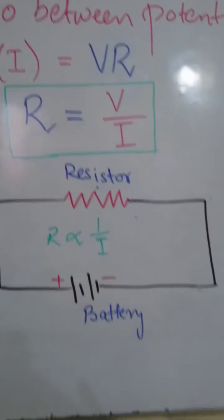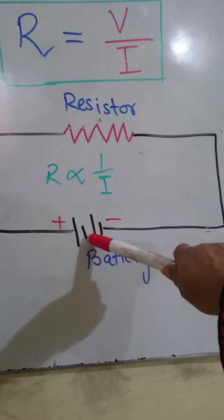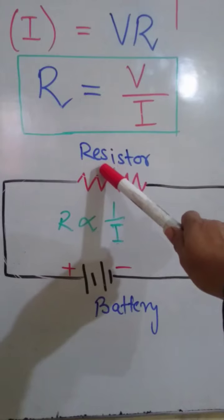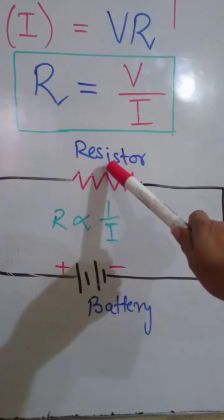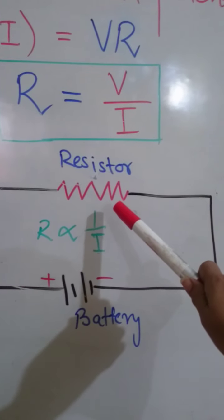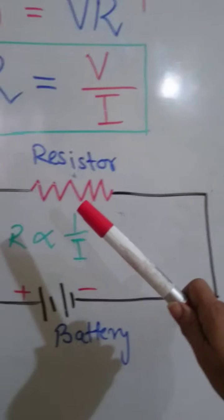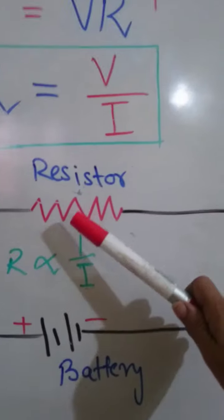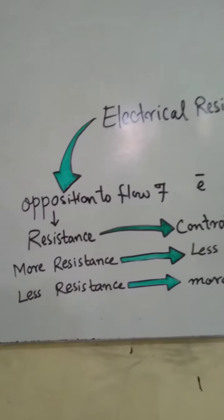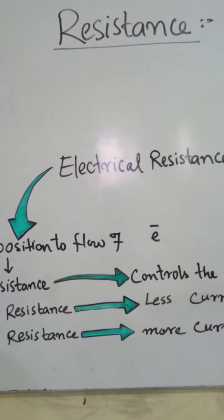In the circuit shown, a battery is attached to electrical wire and a resistor is connected. The purpose of attaching a resistor is that it controls the flow of electrons — it is the opposition to the flow of electrons. Resistance means to stop or control something. More resistance means less current, and less resistance means more current — resistance is inversely proportional to current.